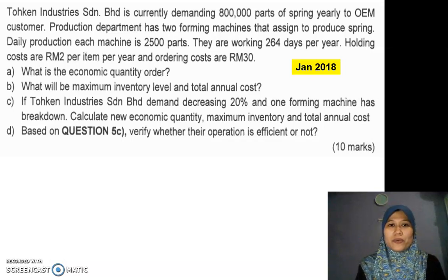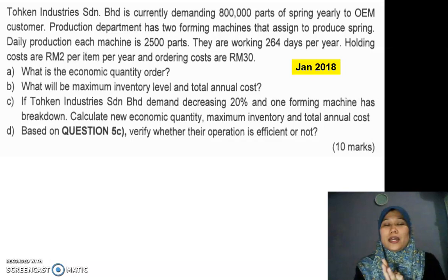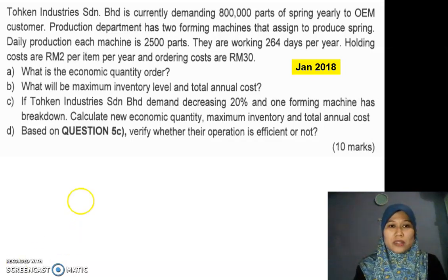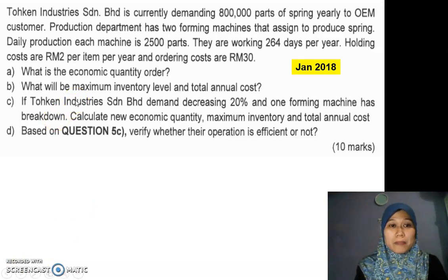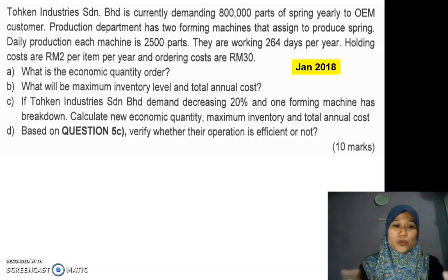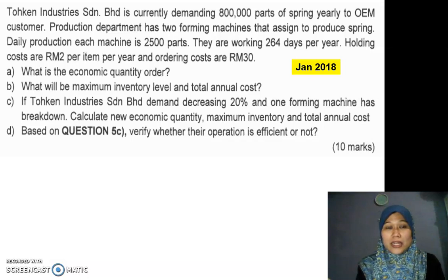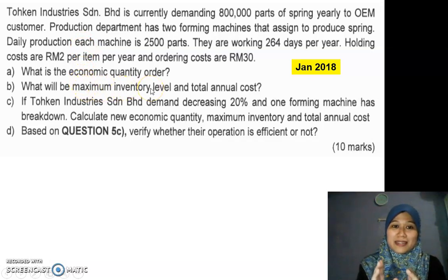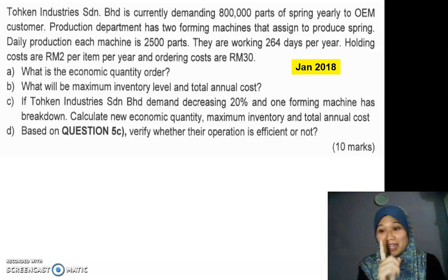This question involves EOQ, POQ, and quantity discount. When you read the question, you need to determine which formula to apply. The clue to decide — either POQ or quantity discount — is to look at the question. If you see maximum inventory level, IMAX, that definitely belongs to POQ. So you get the clue there.